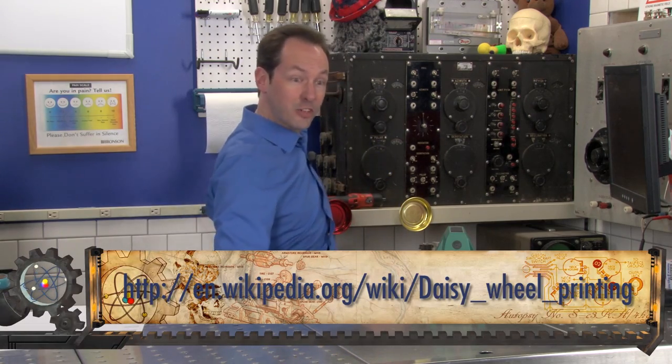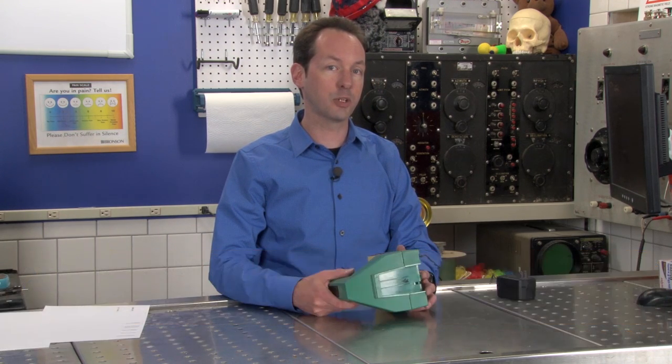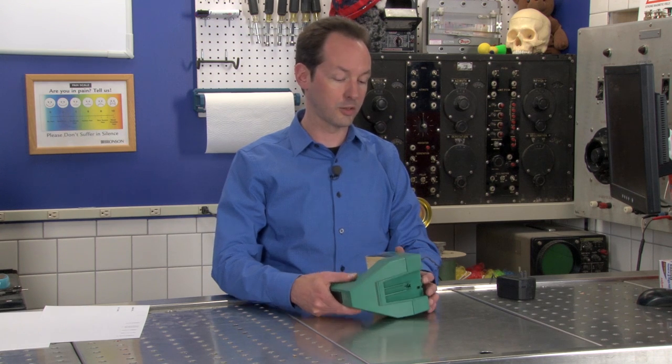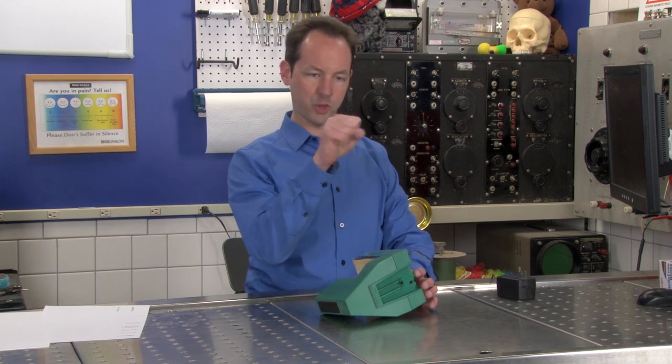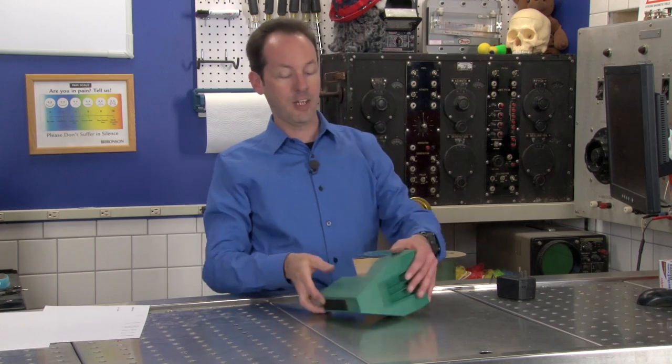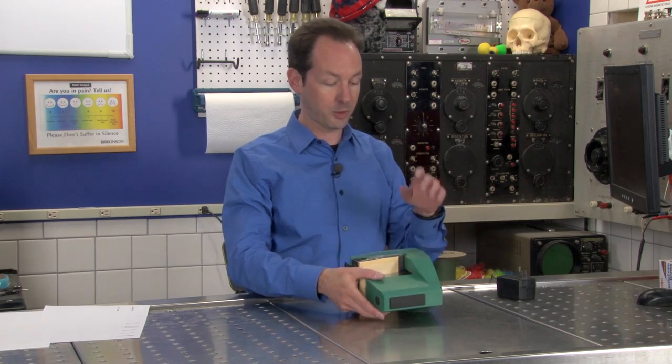And I want to take a daisy wheel printer apart. That would be really fun. I think we have one in the pile. I'll have to find out. Maybe the next autopsy will be an old printer of some sort. Daisy wheel or the ball one. Those are cool. I've never gotten to take one of those apart, even like when they were popular.